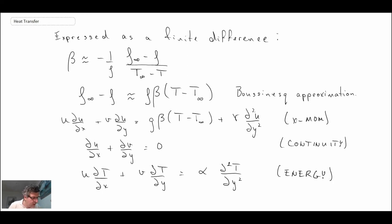So those are the three equations we need to solve if we want to determine the temperature and velocity profile in front of or above a plate that has natural convection. Remember, y was in that direction, x is in that direction.